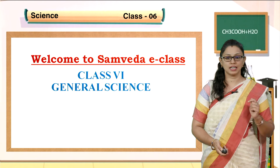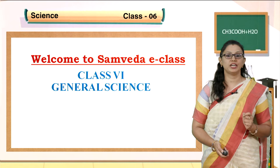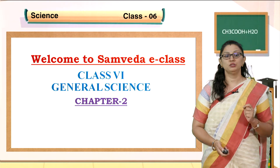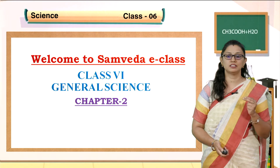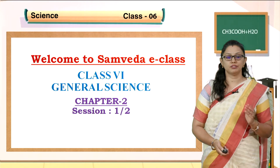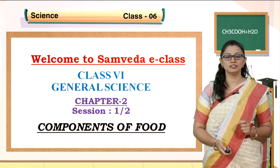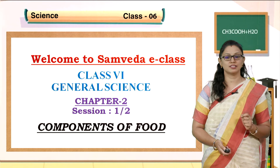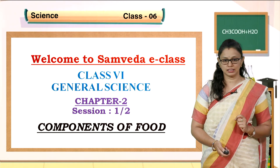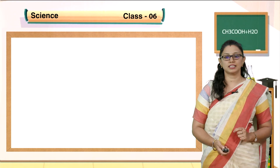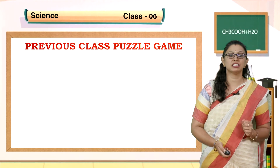In the previous class, we discussed Chapter 1 - food, where does it come from. Today we will be discussing Chapter 2. I have divided this chapter into two sessions. The chapter name is 'Components of Food' - this is Chapter 2 in your Class 6 General Science. Before starting class, let us have a puzzle game about the previous class.